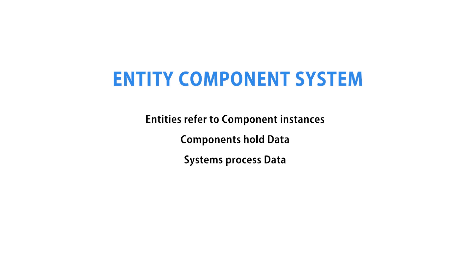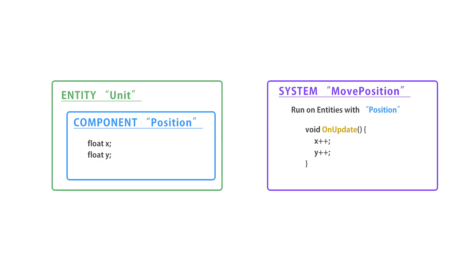You have an entity — that entity contains components which hold the data, and the systems apply logic to that data. For example, you have an entity named 'unit'. That entity has a component called 'position' which holds an x and y value. Then you have a system called 'move position' which runs on every entity that has a position component and moves its x and y values.